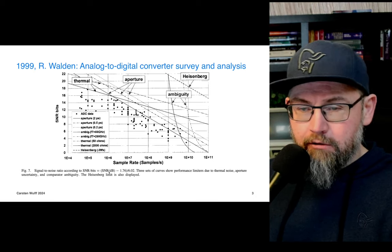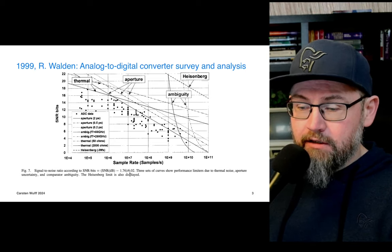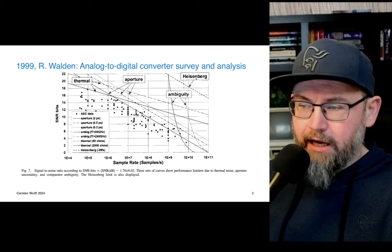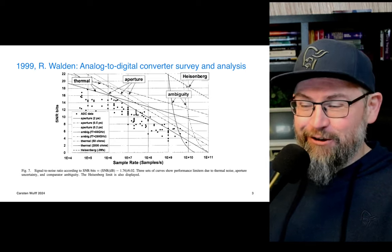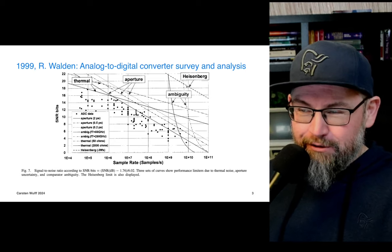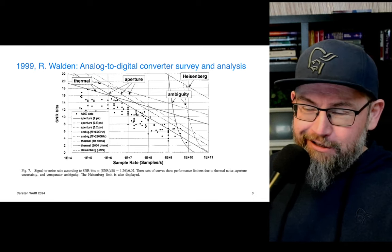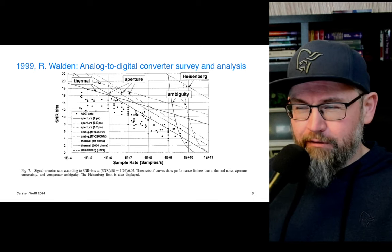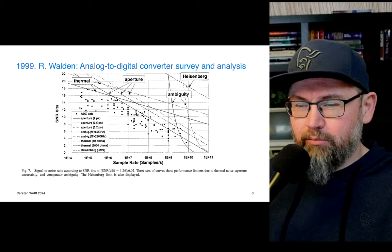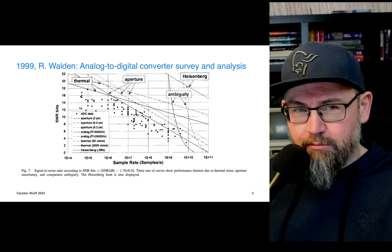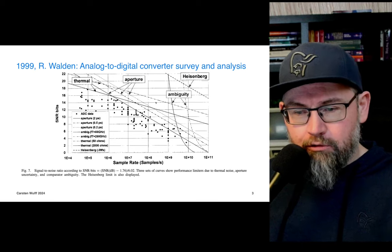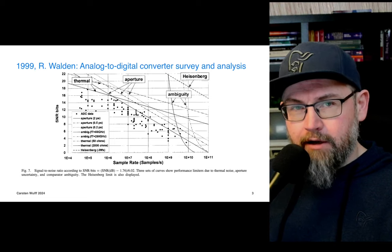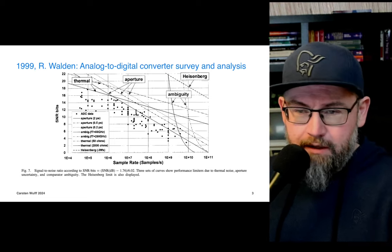We'll see later why it's that equation. Also in this graph we have Heisenberg, because there's an uncertainty principle relating to energy and time, and based on some rough mathematics you can set a kind of Heisenberg limit. Those sort of limits you have to take with a grain of salt — you have to check what the assumptions were in the paper. But there's a general trend that as you make ADCs faster, they will have fewer bits.